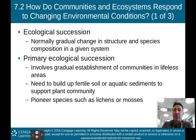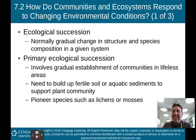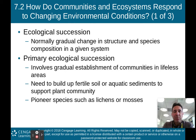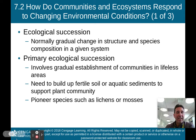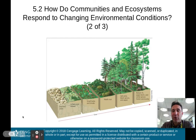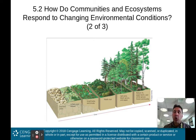Primary ecological succession involves the gradual establishment of communities in lifeless areas. You need to build up fertile soil or aquatic sediments to support a plant community. Pioneer species such as lichens or mosses actually start that process. Primary ecological succession basically means starting from scratch — starting from nothing, meaning you have no soil present to start growing plants.